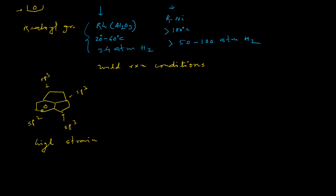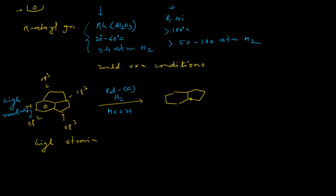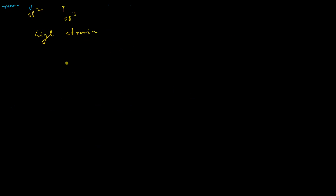Due to that strain, the reactivity of this phenyl ring is very high. Because of this high reactivity, you don't need the highly active rhodium catalyst. If you simply take palladium on activated charcoal in presence of hydrogen gas and methanol as solvent, you will get the saturated hydrocarbon. This is an example where strain promotes the reaction.